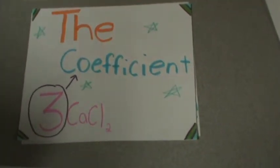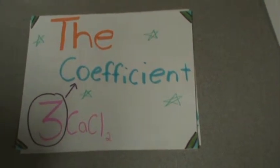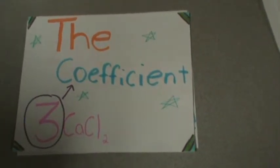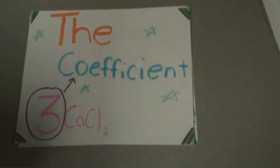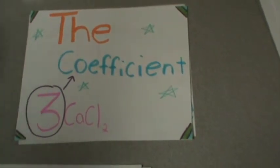The coefficient. The coefficient is a number written in front of chemical symbols and indicates the number of molecules. So here we see three molecules of calcium chloride.